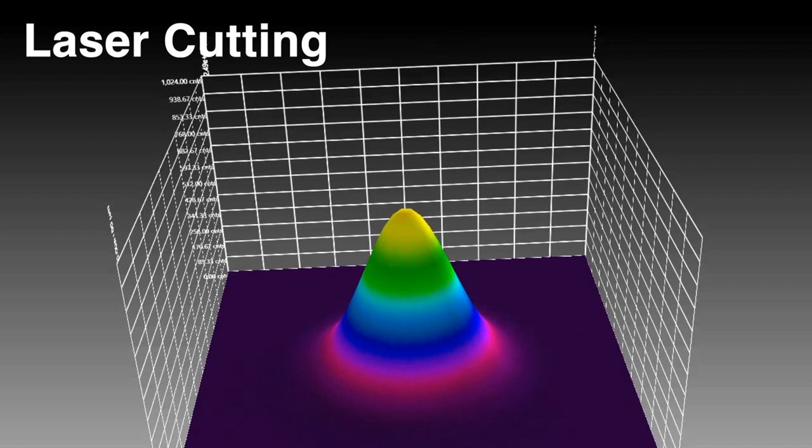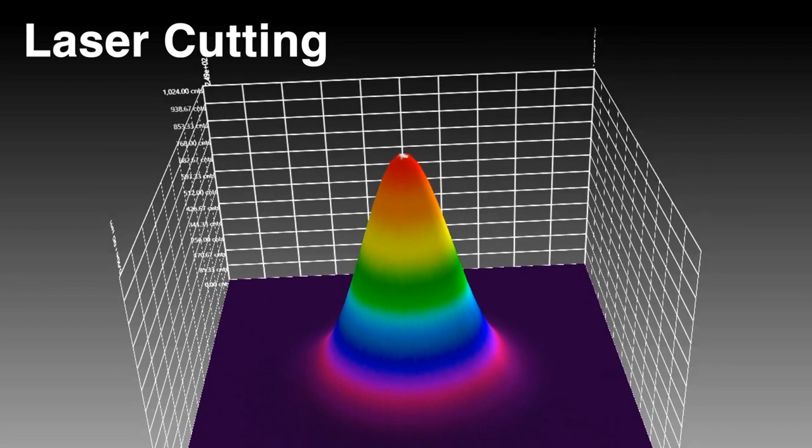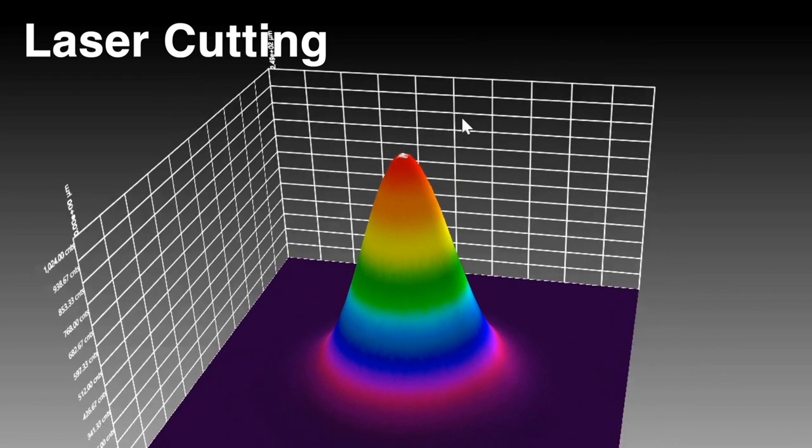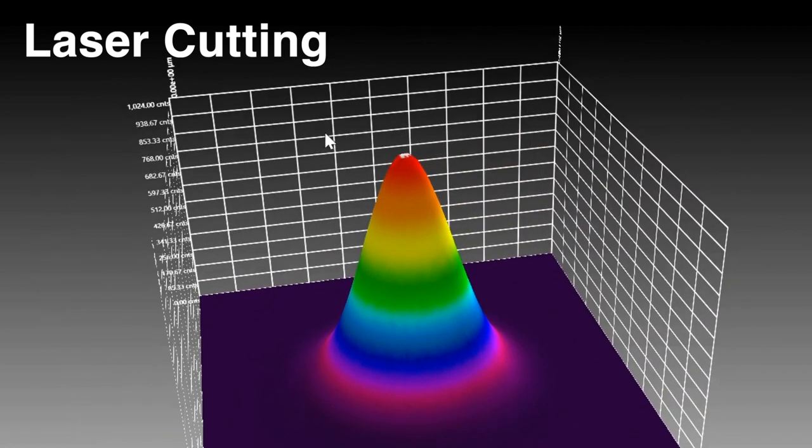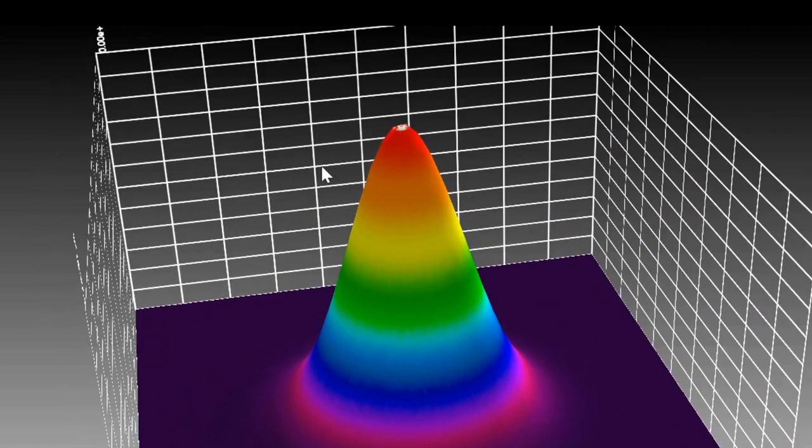For laser cutting, the beam is precisely focused so that the shape of the focus spot and the density of the energy in that spot are perfectly symmetrical, round, and consistent.